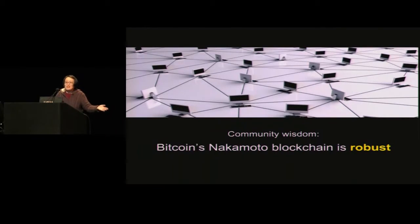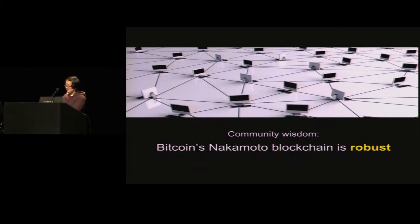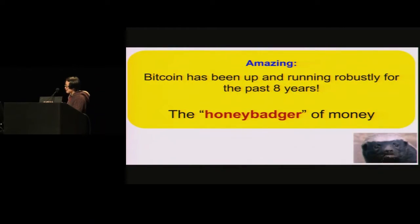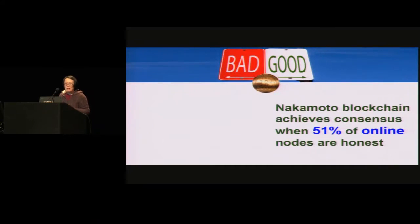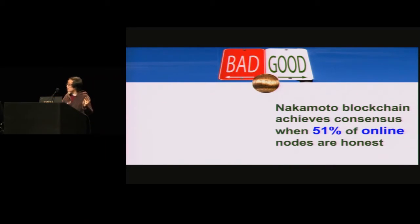Let's hear what the people have to say. The community tells us that Bitcoin's Nakamoto blockchain protocol is exceptionally robust. In fact, the Bitcoin protocol has been up and running pretty much without interruption for the past eight years. For this reason, people refer to Bitcoin as the honey badger of money — and honey badger is a very robust animal. We can actually formally prove that the Nakamoto blockchain protocol gives you consensus in the sleepy model.